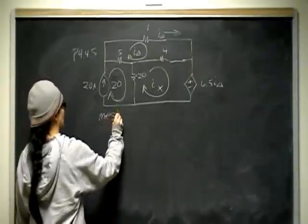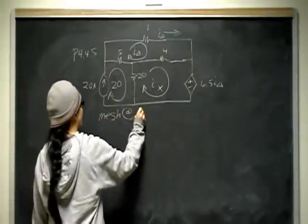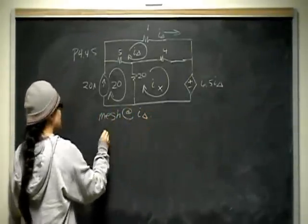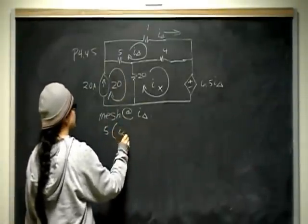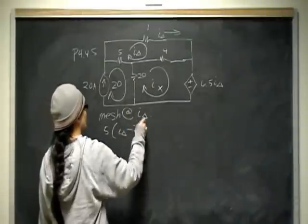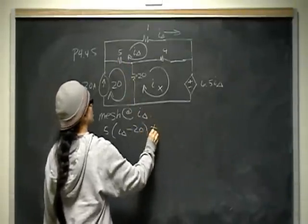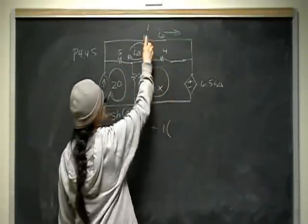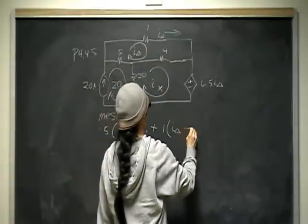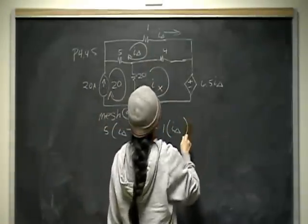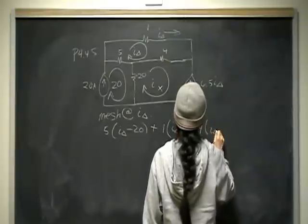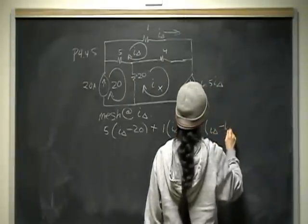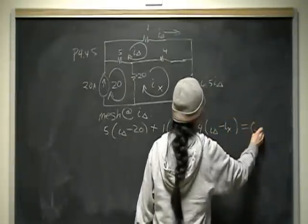So mesh at I delta, that's going to be 5 ohms times I delta minus 20. That's that net current, plus 1 ohm times I delta, plus 4 times I delta minus Ix. And all of that has to equal zero according to KVL.